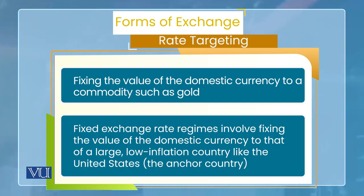दूसरी form यह हो सकती है कि आप अपनी currency की value किसी foreign currency के साथ peg कर लें, यानि कि उसके साथ जोड़ लें। जैसे US की economy एक large और stable economy है, उसकी currency dollar है। तो आप dollar के साथ rupee की value तय कर लें और फिर उसको fix रखें। Monetary policy उस exchange rate को हमेशा achieve करे — यह दूसरा तरीका हो सकता है। Foreign currency के साथ fix करने की अपनी कई forms हैं जो अगले sessions में discuss करेंगे।